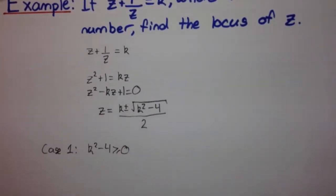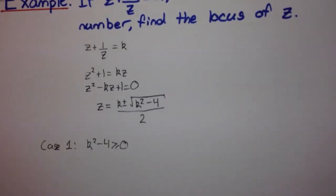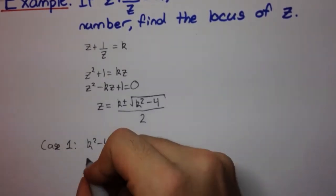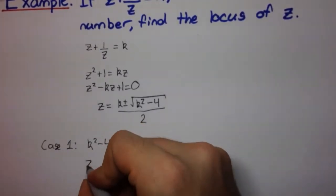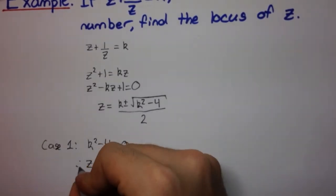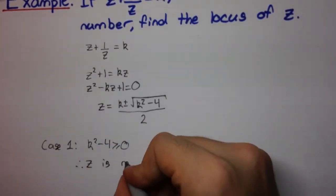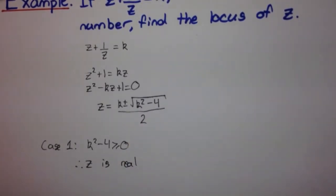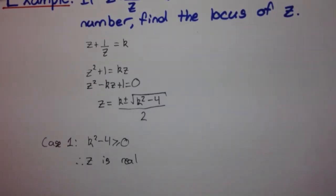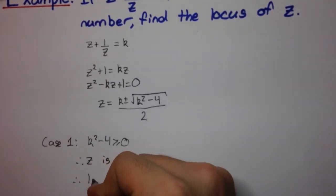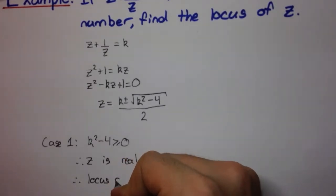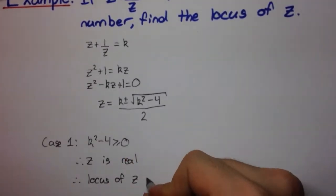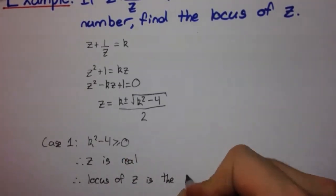Now, if k squared minus 4 is greater than or equal to 0, what do we have? We have that z is real. If this is greater than 0, then we're going to have some real number. So if z is real, then this is going to take the whole real line. So therefore, locus of z is the real axis.